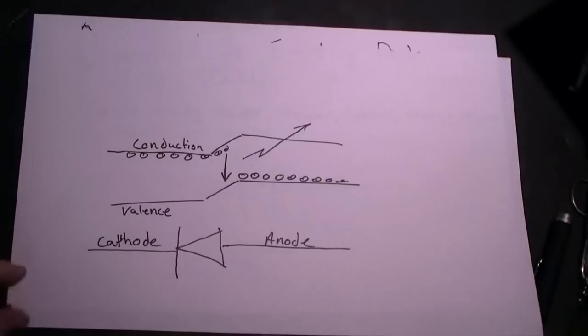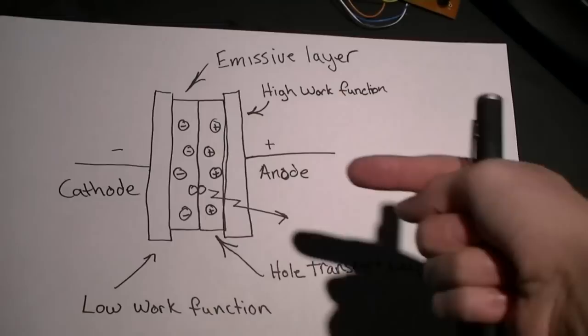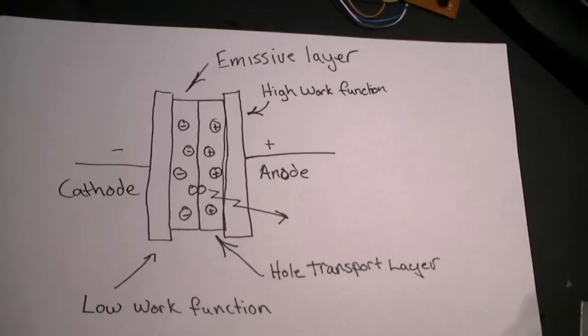Organic LEDs have similar structures, however, they're made of polymers that are carbon based. They have cathodes and anodes injecting electrons and holes, and band gap materials that emit photons.